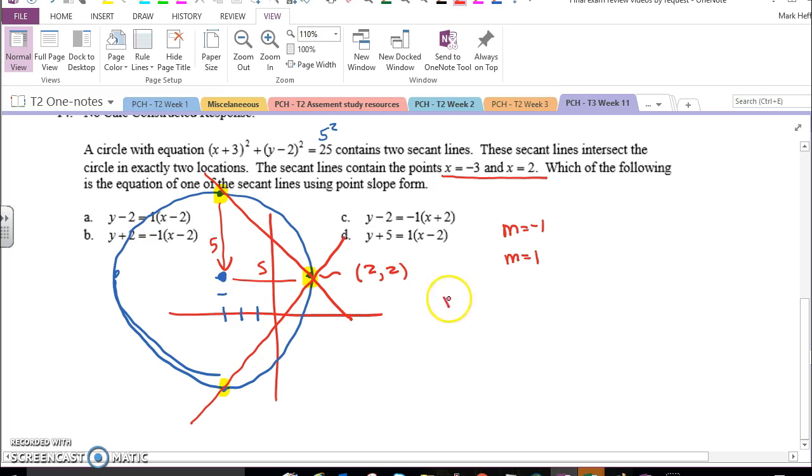So that would mean we have y minus y1, equals m times x minus x1, y minus, well we said the y coordinate was 2, equals m of either 1 or negative 1, times x minus 2.